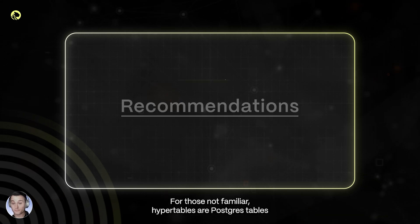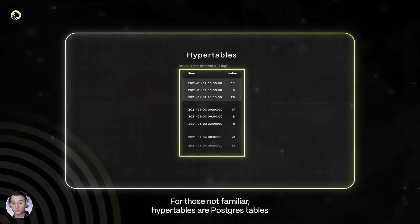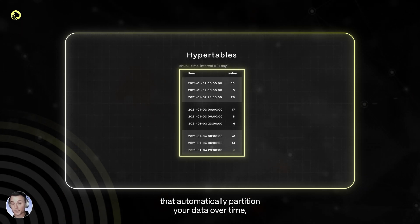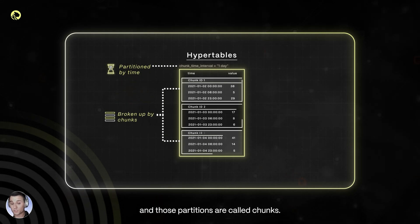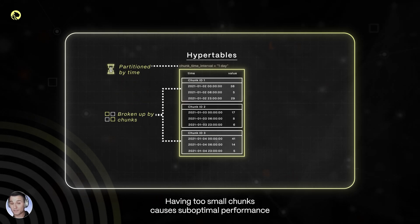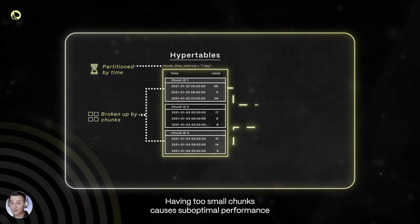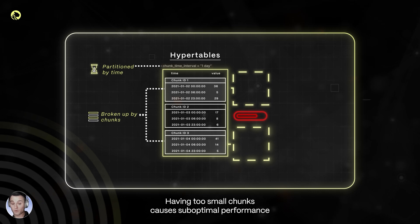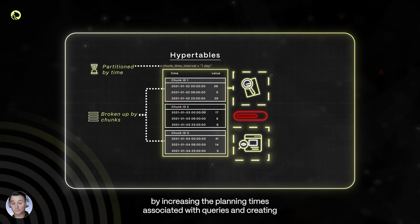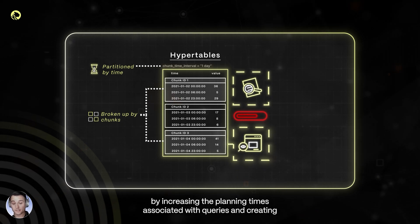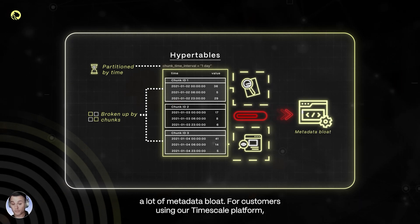For those not familiar, hypertables are Postgres tables that automatically partition your data over time, and those partitions are called chunks. Having too small chunks causes suboptimal performance by increasing the planning times associated with queries and creating a lot of metadata bloat.